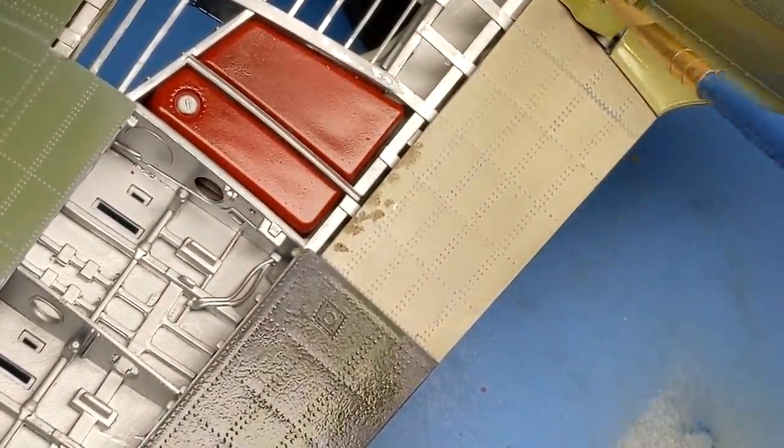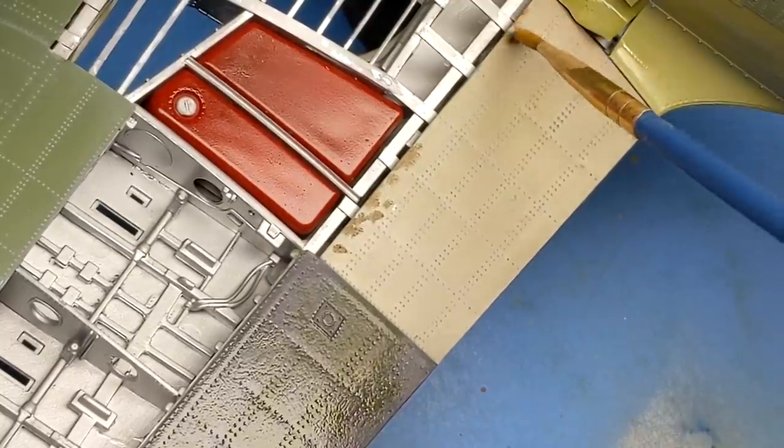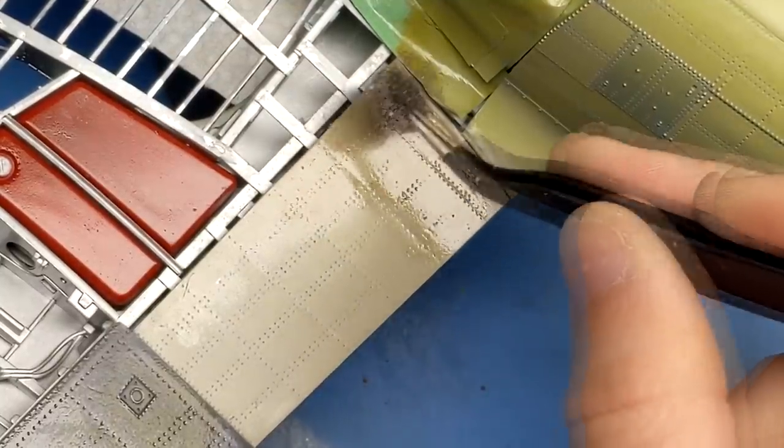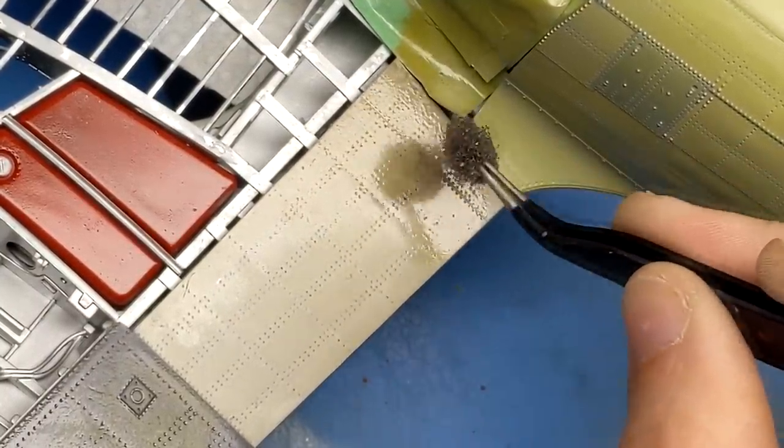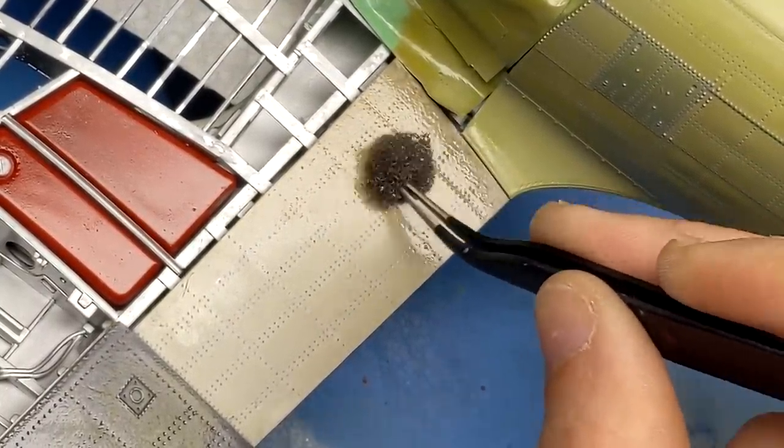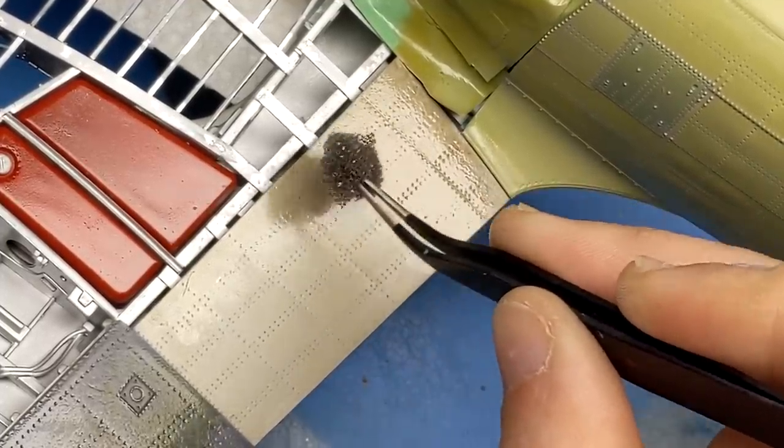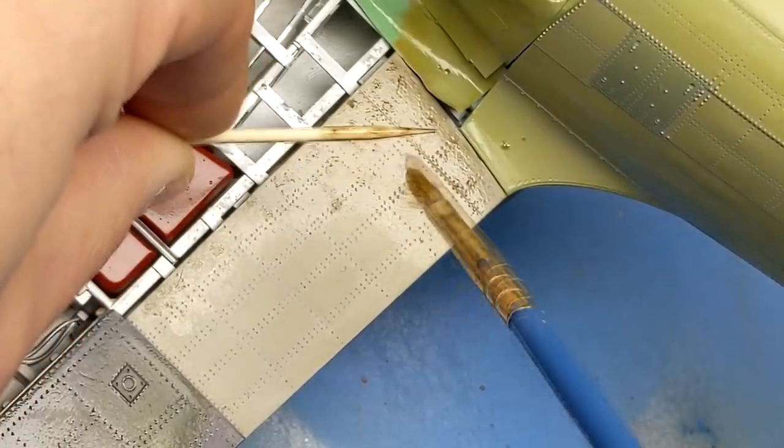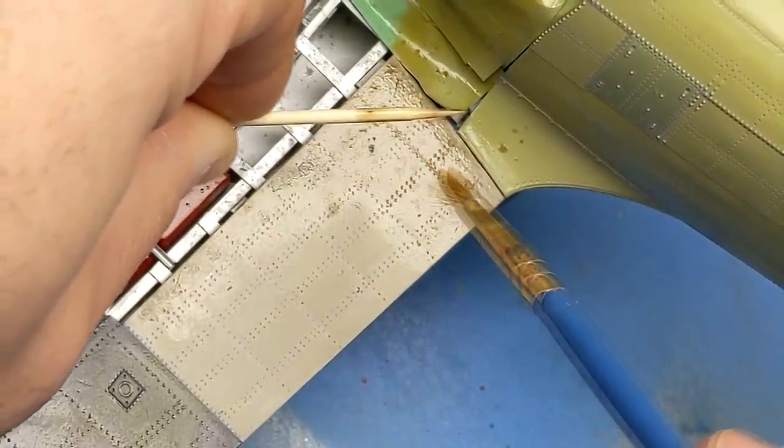Once the wash has had two days to dry, I'll come in and start adding more weathering with oils to the aircraft. The nice thing about working with oil paints for weathering is if you're not happy with how it's looking, you can just wipe it all away and start again. That's the nice thing about the safety net from that gloss coat. If you want more randomness with your weathering, you can use the splattering method I'm using here.